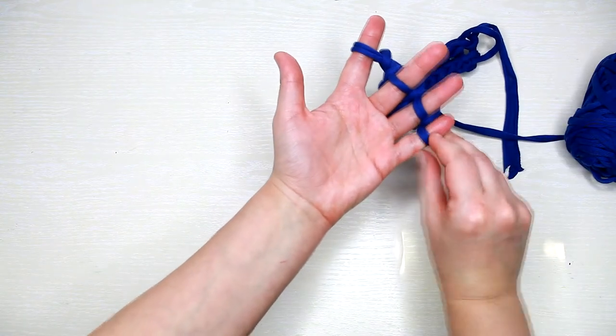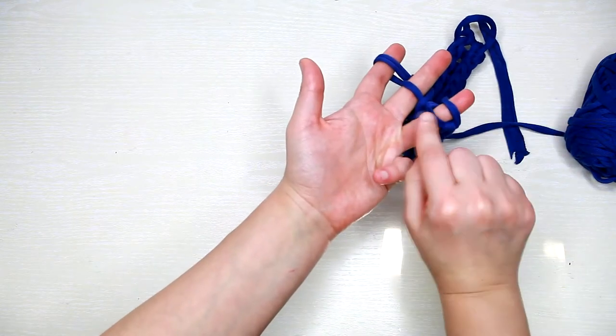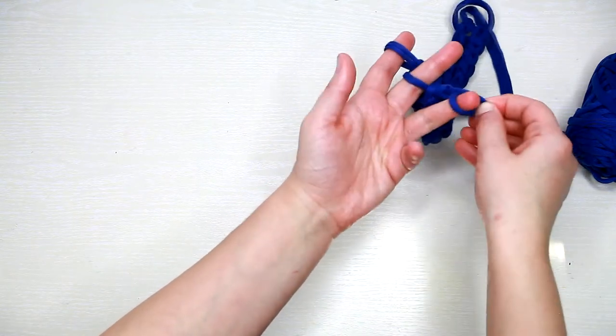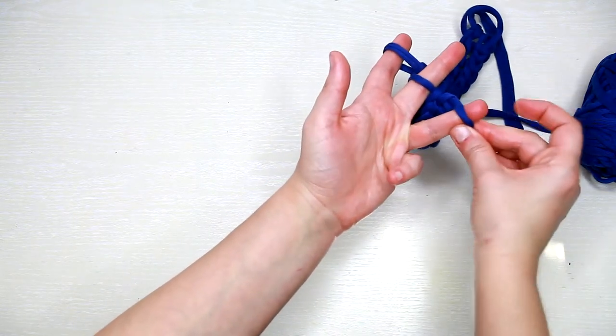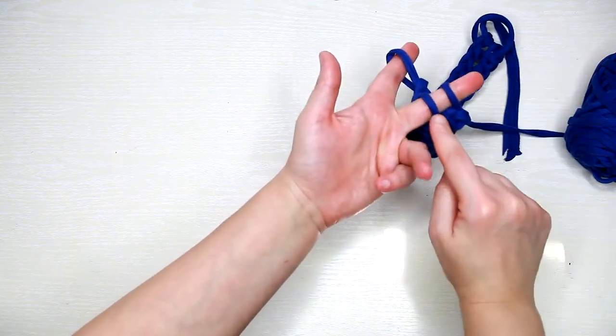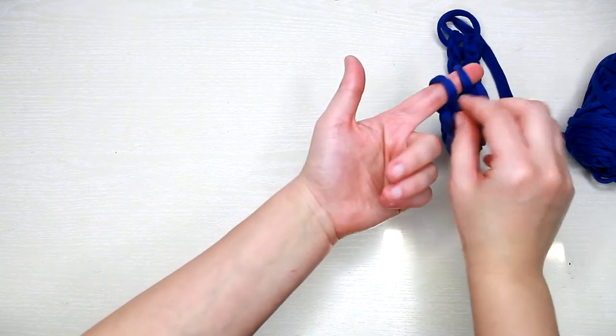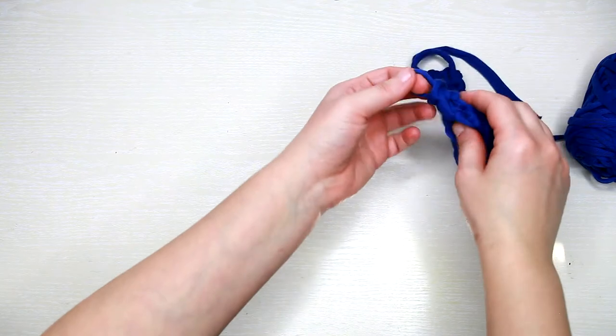Then, like before, pull the lower loop over the top one. Pass it onto the middle finger, pull the lower loop over the top one, pass it to your index finger, then pull the lower loop over the top one.